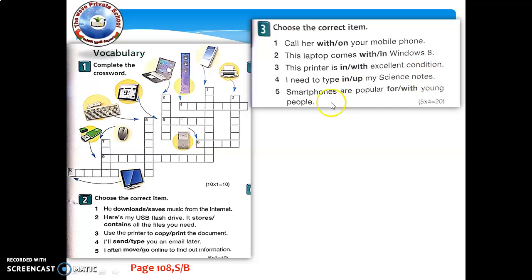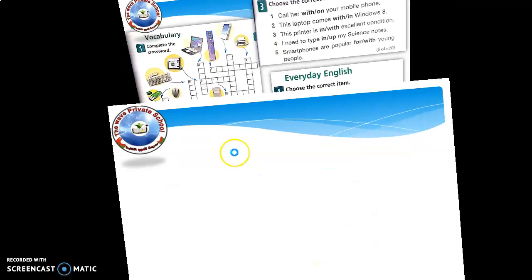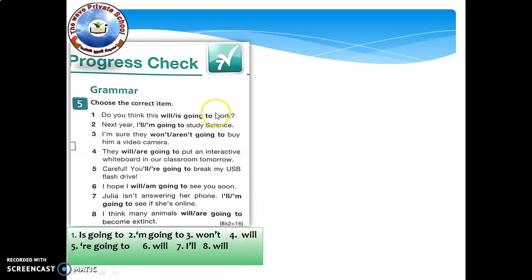Number four: I need to type out my science notes. Number five: smartphones are popular with young people. Then, what is the proper answer? Are you going to the planetarium? Probably not, B. Number two: I hope you have a great time. I hope you have a great time. And then I'm sure we will, A. Number three: what are you doing on Saturday? Nothing much, B. Number four: do you want to come with us? Absolutely. Now here, I've also given the answers here. Just read them and then circle the correct answer.